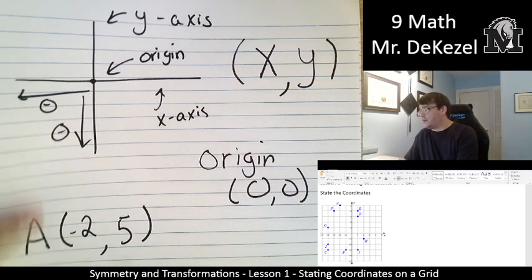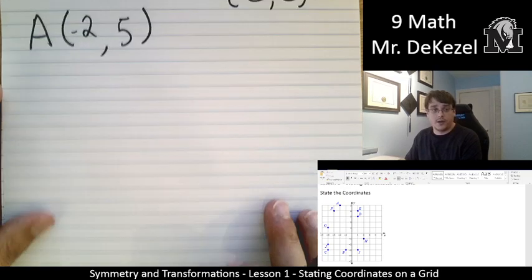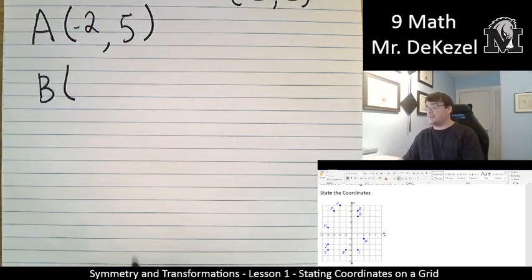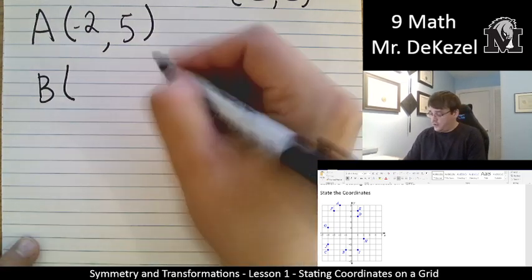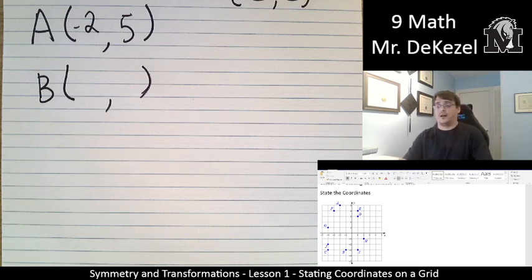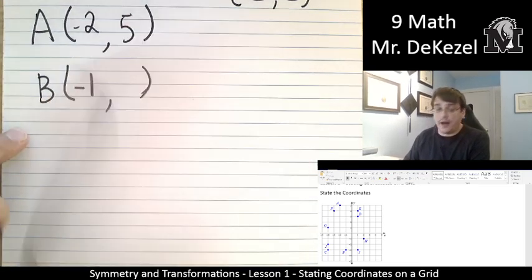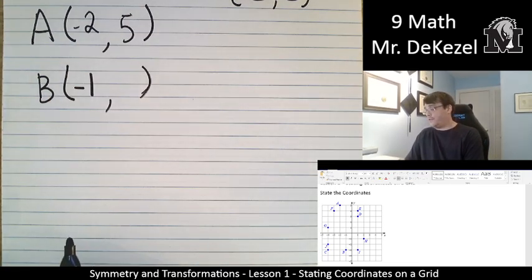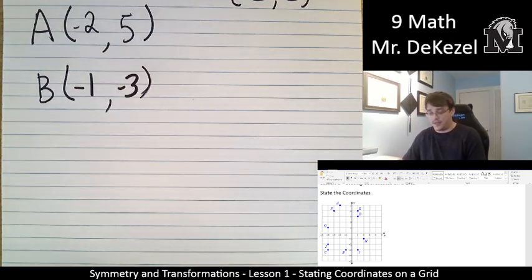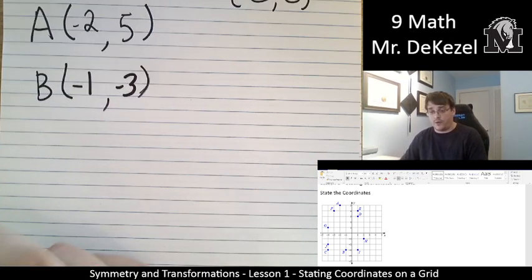Let's continue on with a few more of these problems. Let's do B. We're going to do the x value first. Where does it go left to right? B goes to the left and it goes 1, so that's at negative 1. And then how far up and down does it go? It goes down 3, so that's negative 3. So that is our point, x value negative 1, y value negative 3.